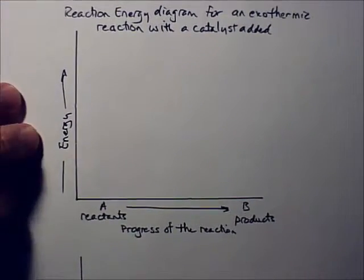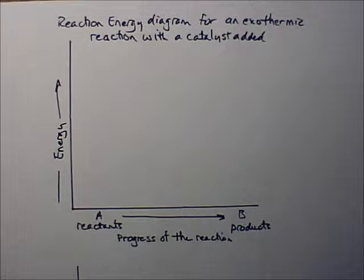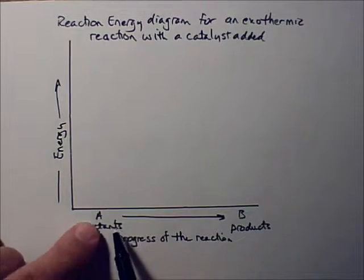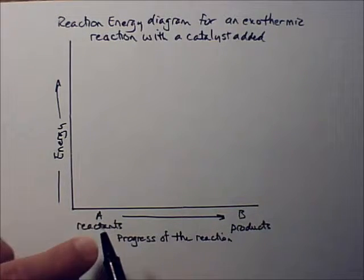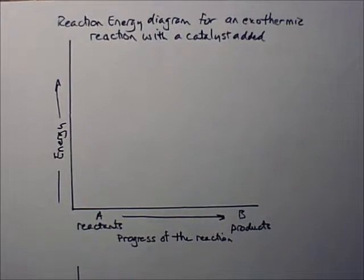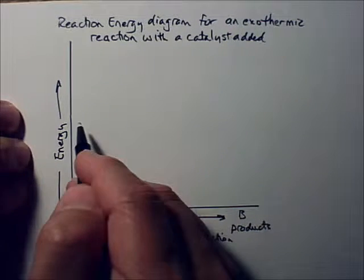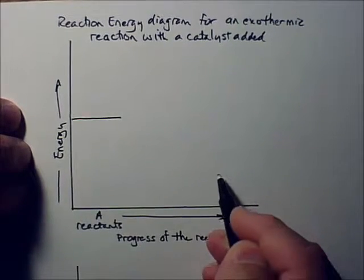If it's exothermic, we're getting energy out of it — it's feeling warm or hot to us. That energy has to come from somewhere. The energy in a chemical reaction is always a product of the bonds. Whatever the reactants are have to have a higher amount of stored energy than the products, so that we can get some energy out. The starting energy has to be higher, the ending energy has to be lower.